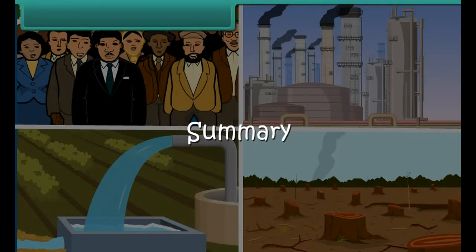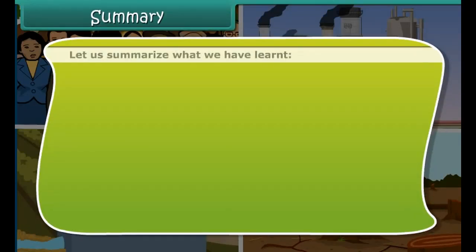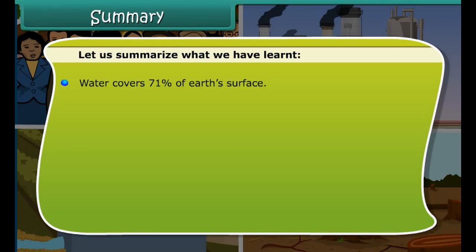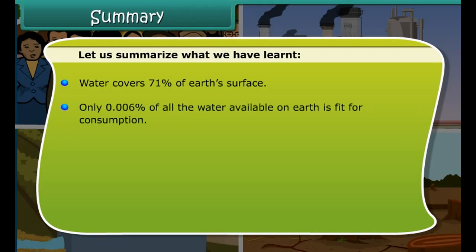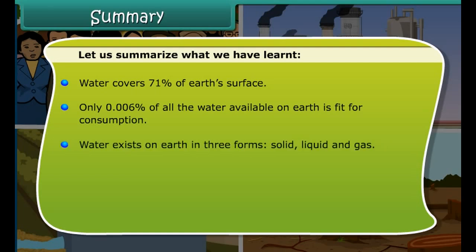Let us summarize what we have learned. Water covers 71% of earth's surface. Only 0.006% of all the water available on earth is fit for consumption. Water exists on earth in three forms: solid, liquid, and gas. The rainwater absorbed by soil is known as groundwater.